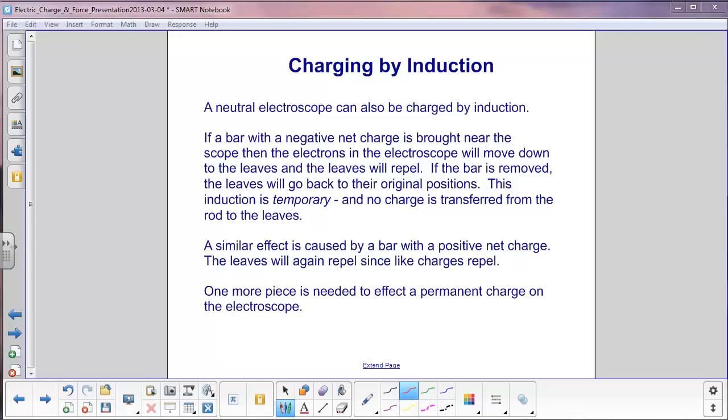You push it near the electroscope, the leaves will spread apart, you pull it away, the leaves will close. One more piece is needed to effect a permanent change on the electroscope.